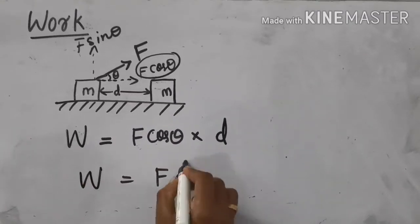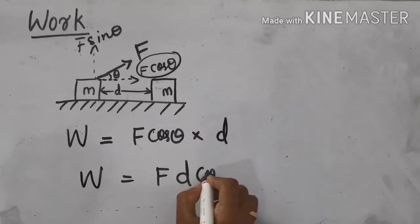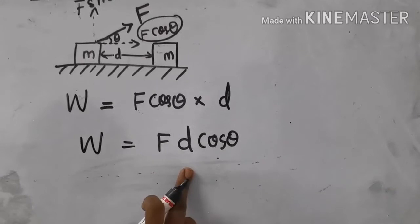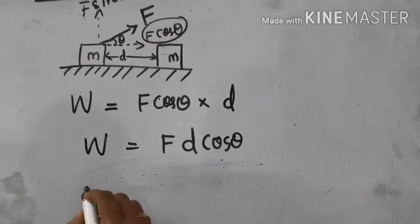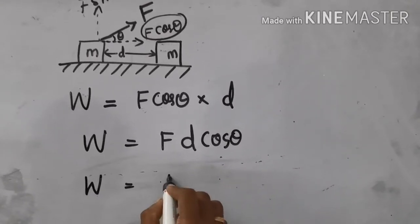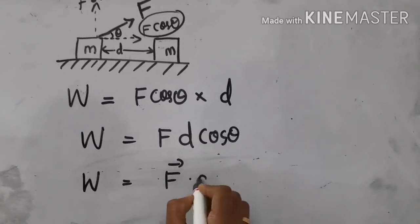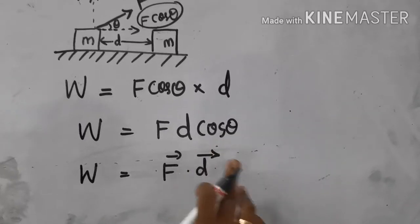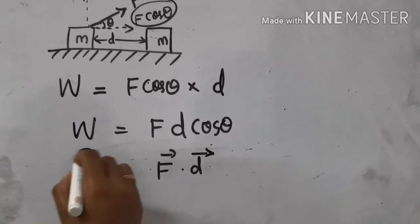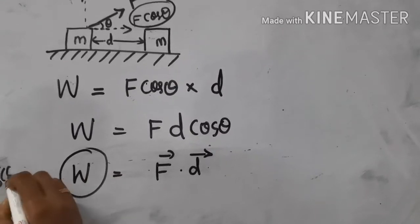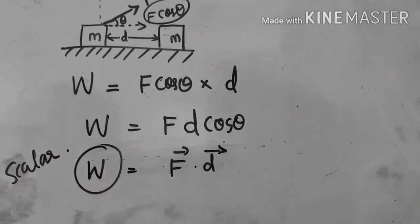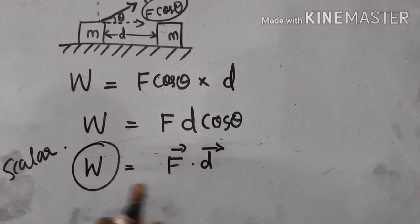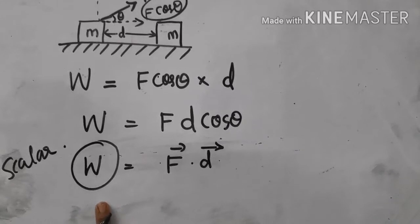We define work as W = F d cos theta. In vector form, this is the dot product of the force vector F and displacement vector d. The dot product of two vectors gives a scalar quantity, so work is a scalar quantity.